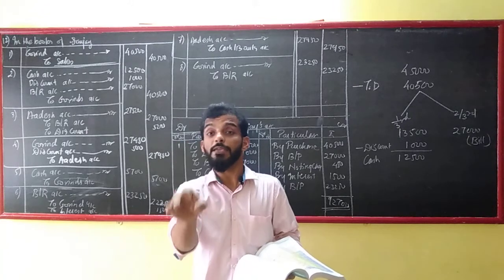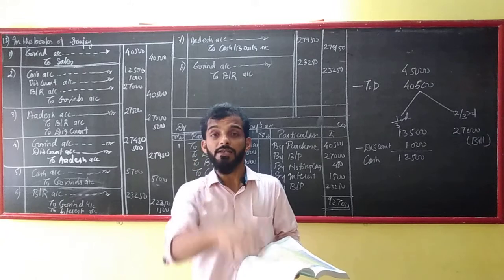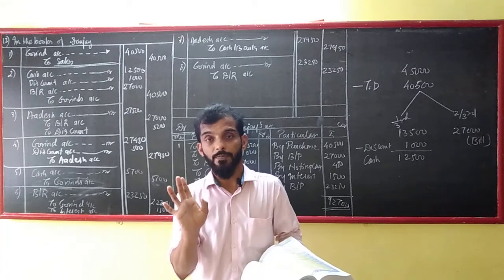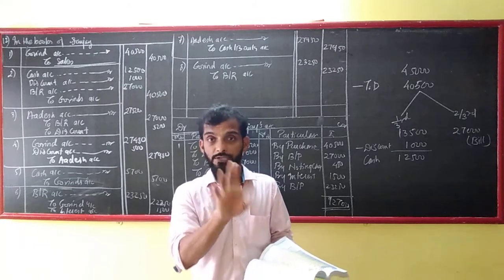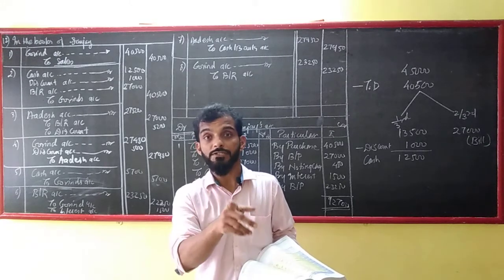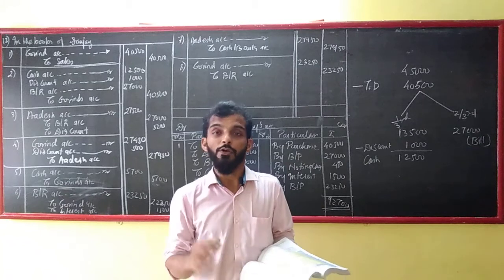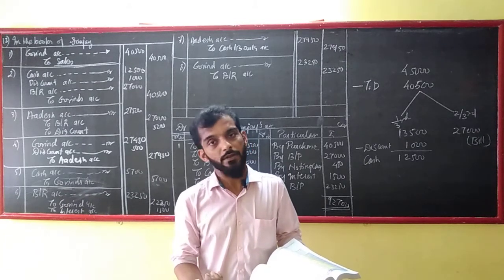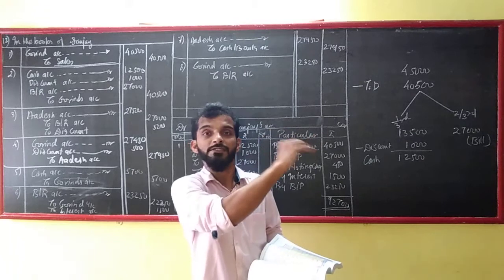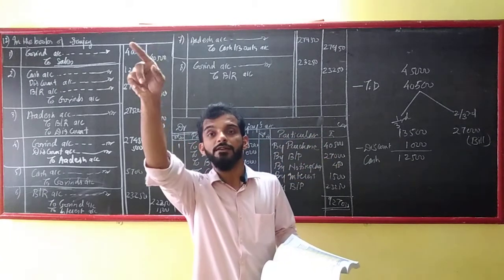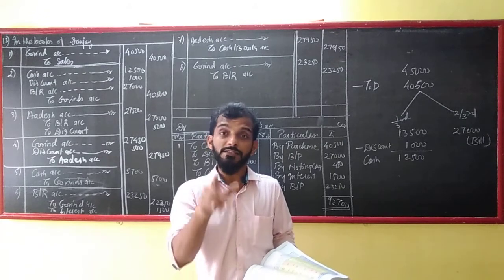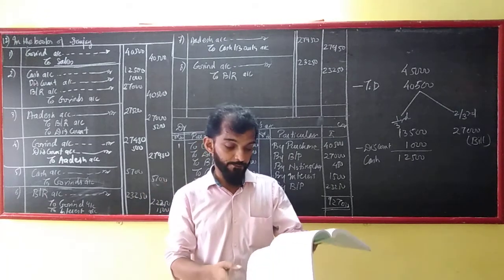Now trade discount is never recorded anywhere. This may be asked in your objectives. Trade discount is never shown in books of accounts. Cash discount is shown in the books of accounts. Cash discount is the loss for the seller. Trade discount is never your loss - it's to attract customers. A business man will not sell at a loss.